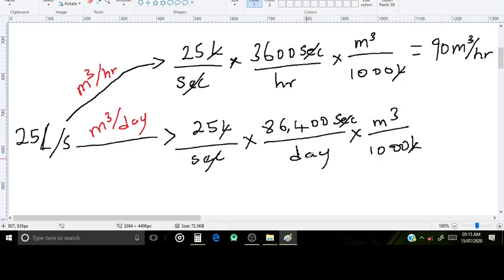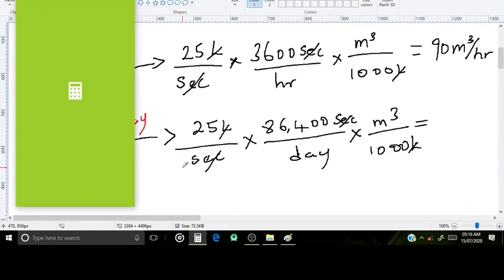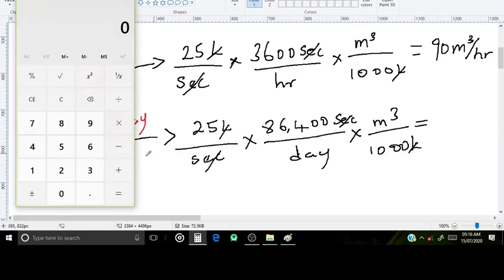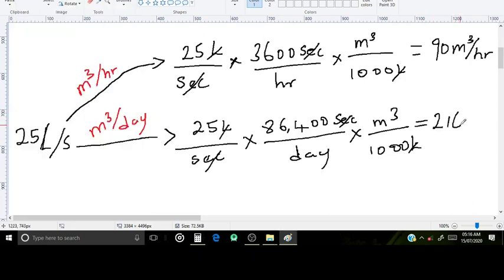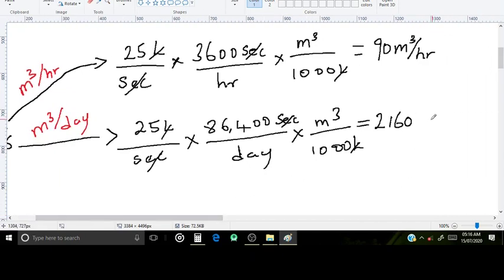with cubic meters per day. Let's type this into a calculator. We have 25 times 86,400 divided by 1000, so we have 2160 cubic meters per day.